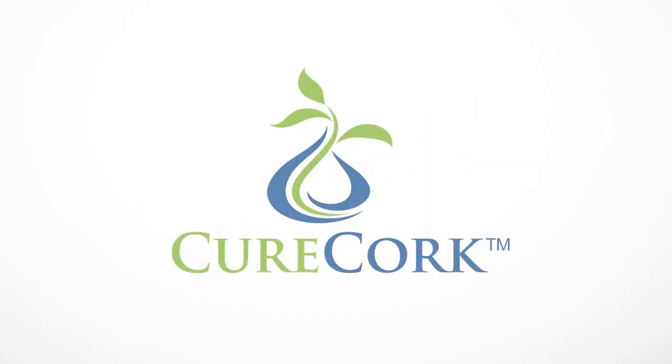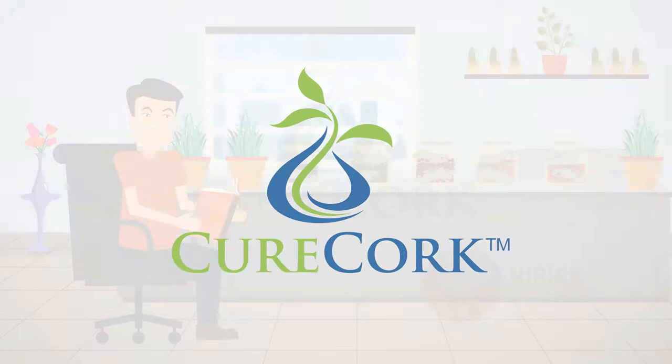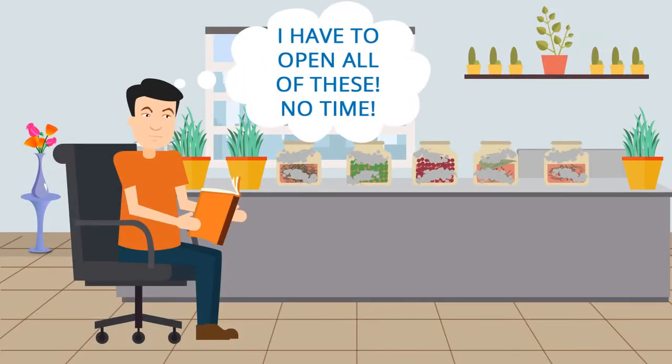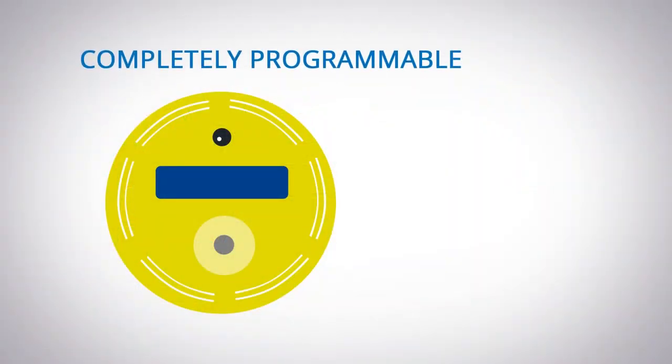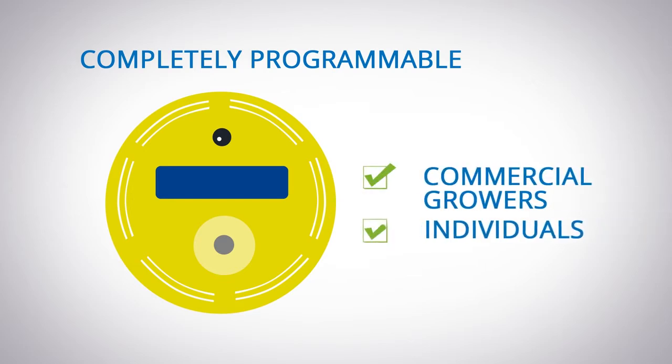Actually there is. All you need is Curecork. Curecork is the first hands-free and fully automated device made to air your herbs at the perfect times. It's completely programmable for different curing preferences and works for everyone, commercial growers and individuals alike.